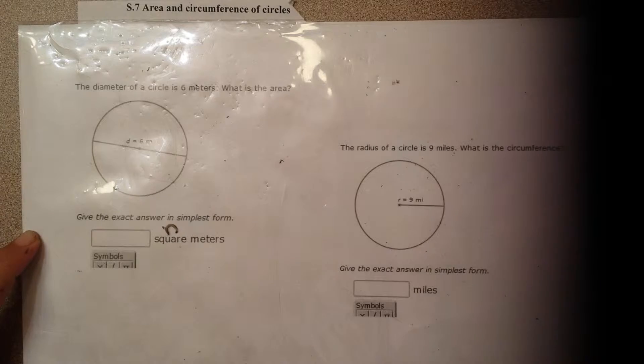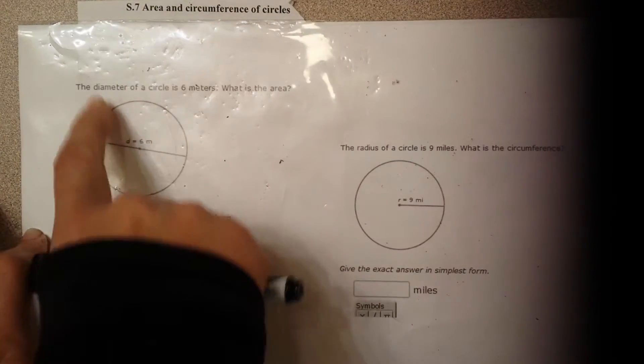Okay, welcome to S.7, area and circumference of circles. So I'm going to take a look at the first circle. It says the diameter of the circle is 6 meters.